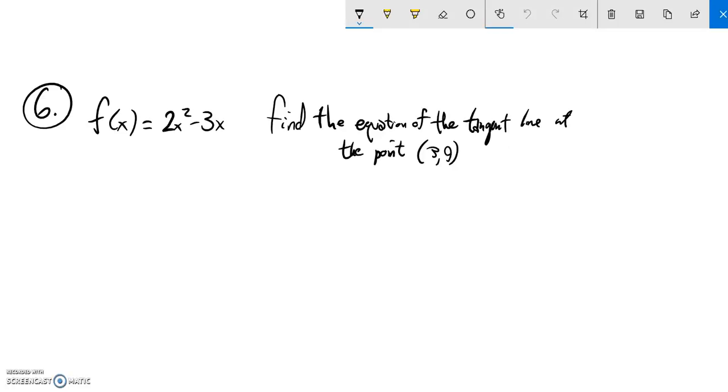This is Math 151 Practice Exam 1, problem number 6. We're given this function and we're asked to find the equation of the tangent line at the point (3,9).